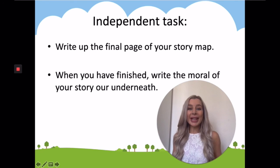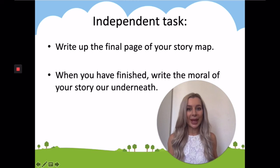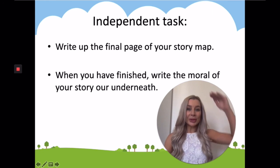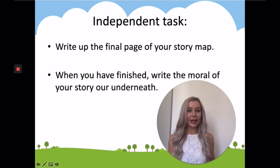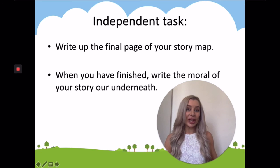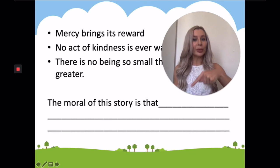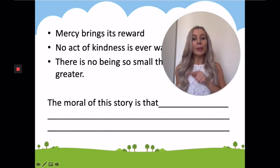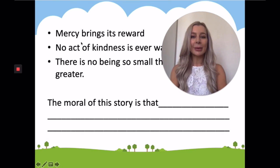For your independent task today, you're going to write up the fourth and final page of your story map. By the end of the lesson you should have an entire written story of your own innovative fable. When you finish that, I would like you to write the moral of your fable underneath — just like I showed you on the last page — writing something like: 'The moral of this story is that...' and then combine some of these ideas to include there.